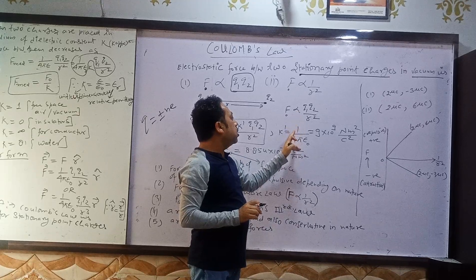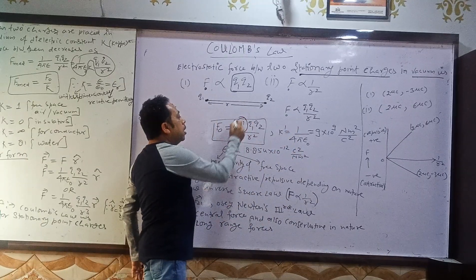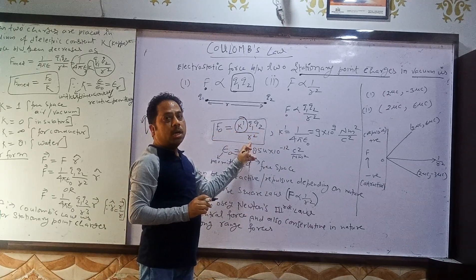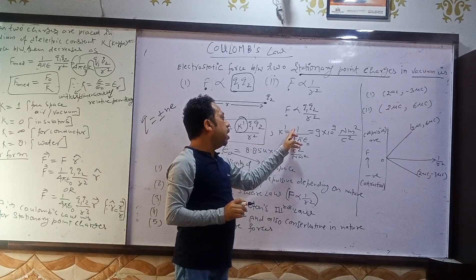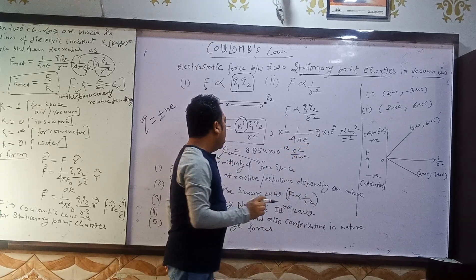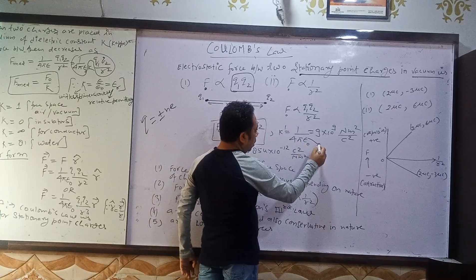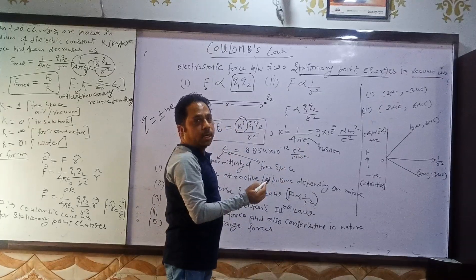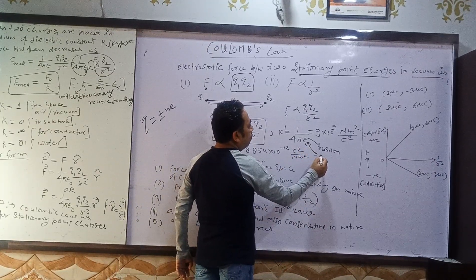Removing this proportionality sign, we have to add a constant. This is the proportionality constant K. So F₀ is K times q1·q2 upon R square. This constant K is termed as 1 over 4π epsilon naught. This epsilon is a Greek word, and the subscript zero stands for free space.